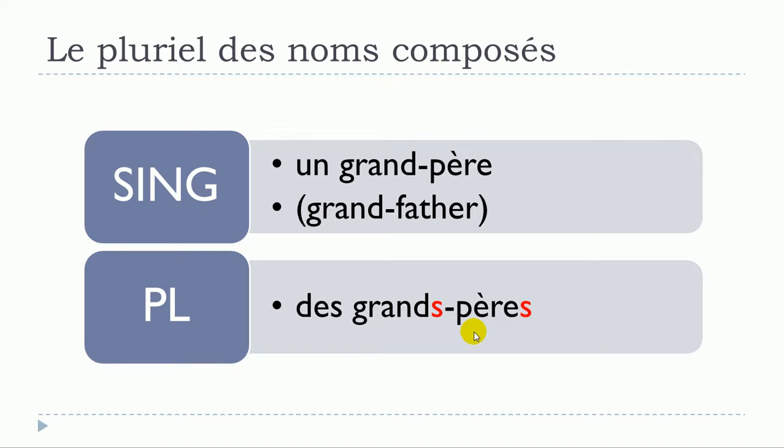It's actually quite simple because it will respect the rule that we saw previously. You just need to put s at the end of each word. So grand with s and then père with s like that. It's not really difficult and especially if you think about that you don't pronounce this s, so actually phonetically it's the same grand-père here and grand-père here.